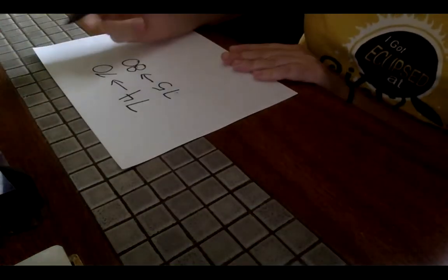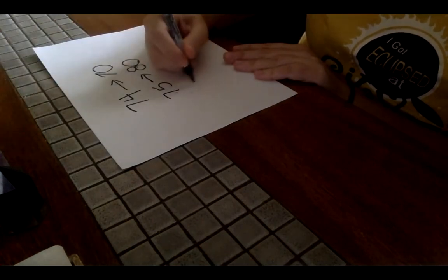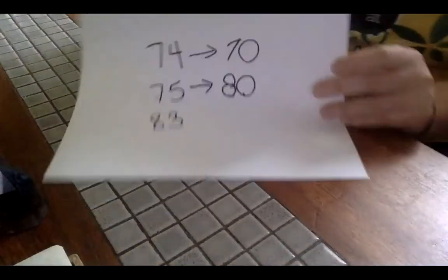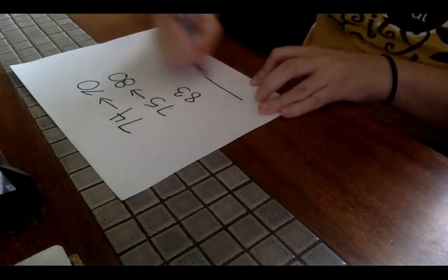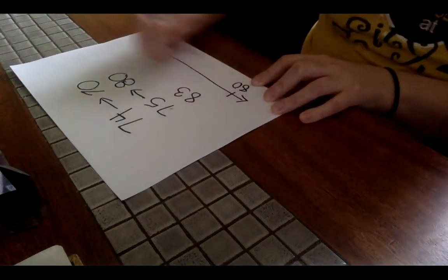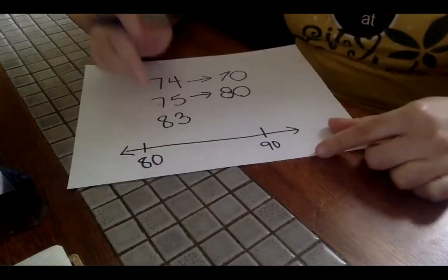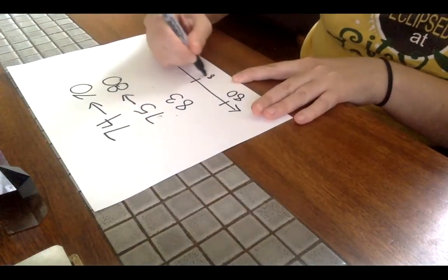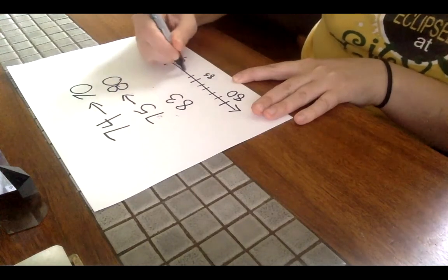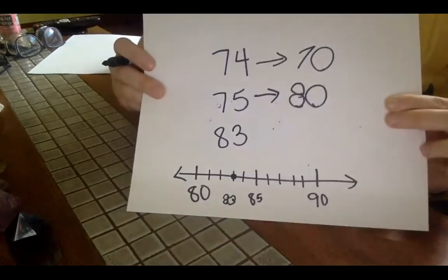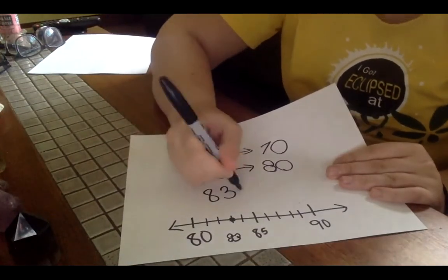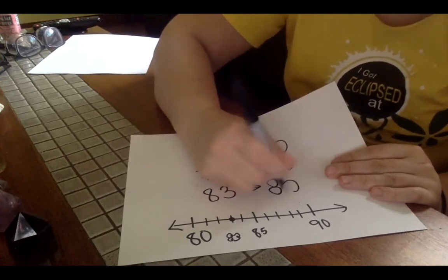You can always draw a number line if you're not sure. Let's say we've got 83. And you're like, I just don't remember the rhyme. I have no idea. Miss Brenda's not here. I cannot remember what to do. Draw a number line. You're trying to see, is it going to round to 80 or 90? 85 is in the middle. We see that 83 is closer to 80. And it's going to stay on that 80th floor.